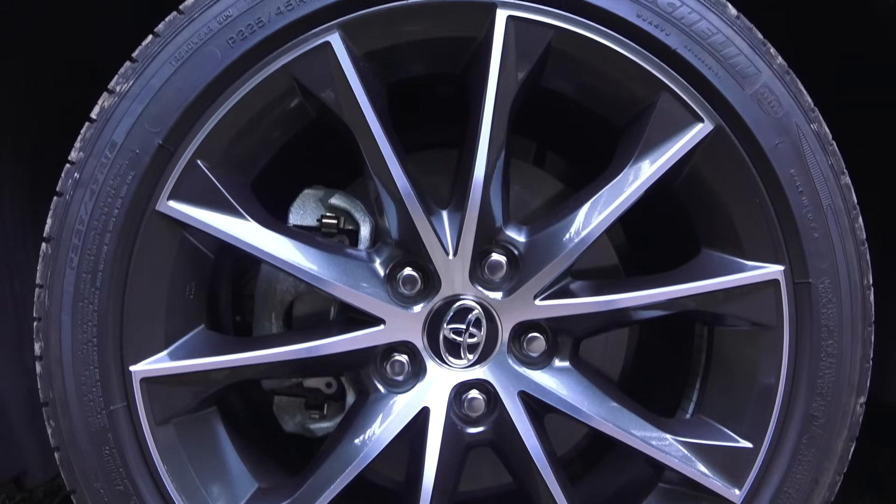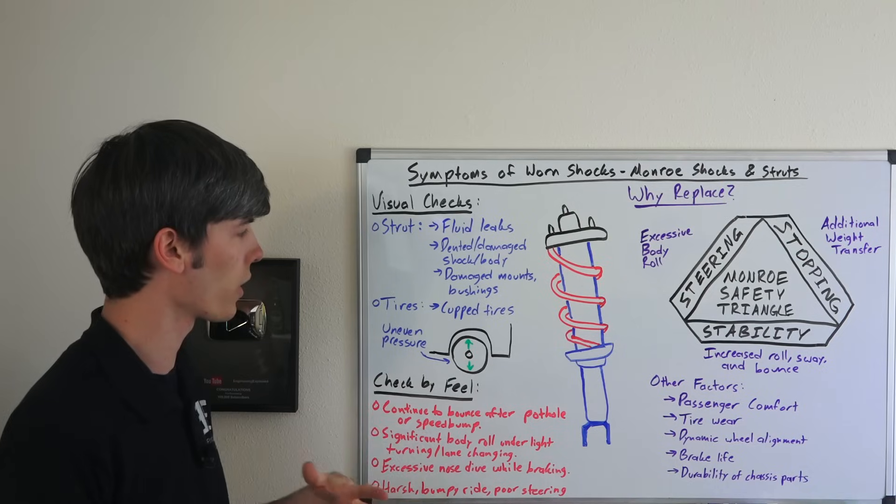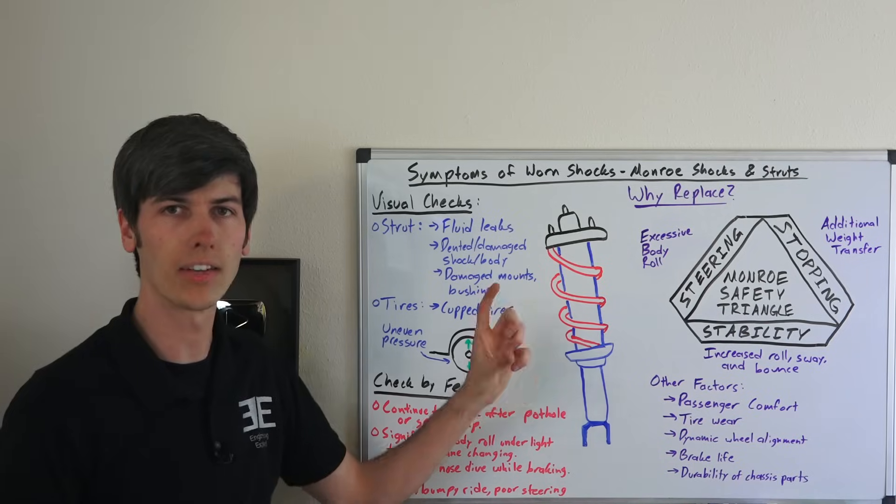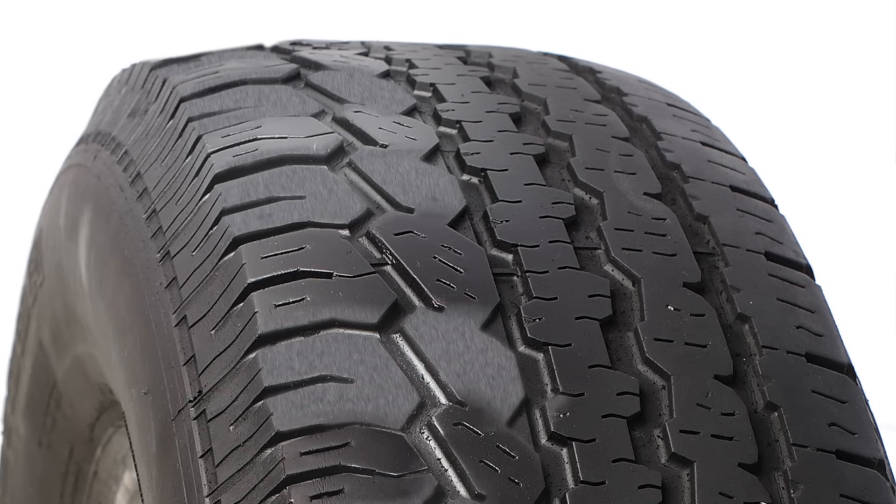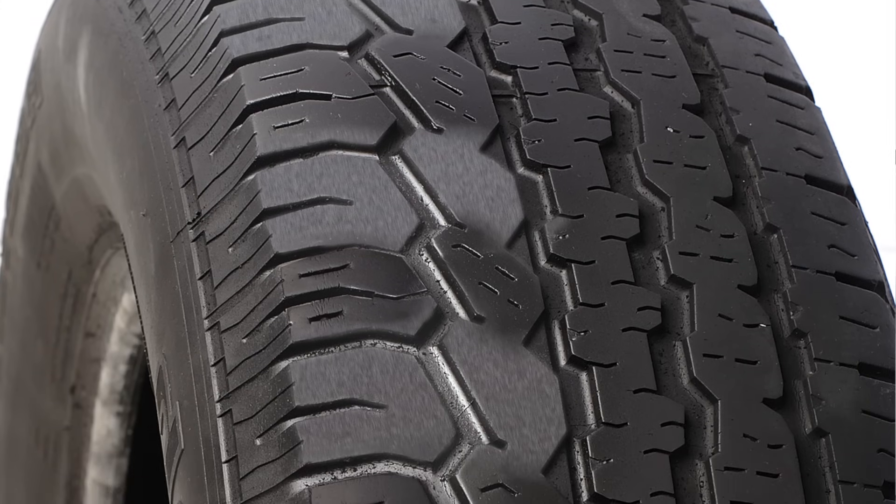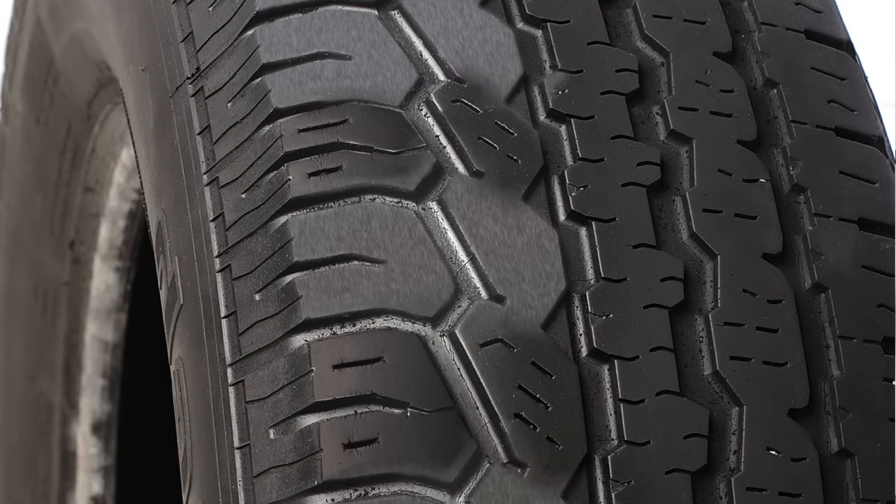Now checking out your tires, one thing you can look for is cupped tires. The reason this would occur with a failed shock is that the failed shock would allow for uneven pressure of the tire as it oscillates up and down and has a little bit of a bounce to it, and that uneven pressure will result in uneven wear on the tire itself. You'll see this as a cupped tire and you may know that you need to replace the shock absorber.